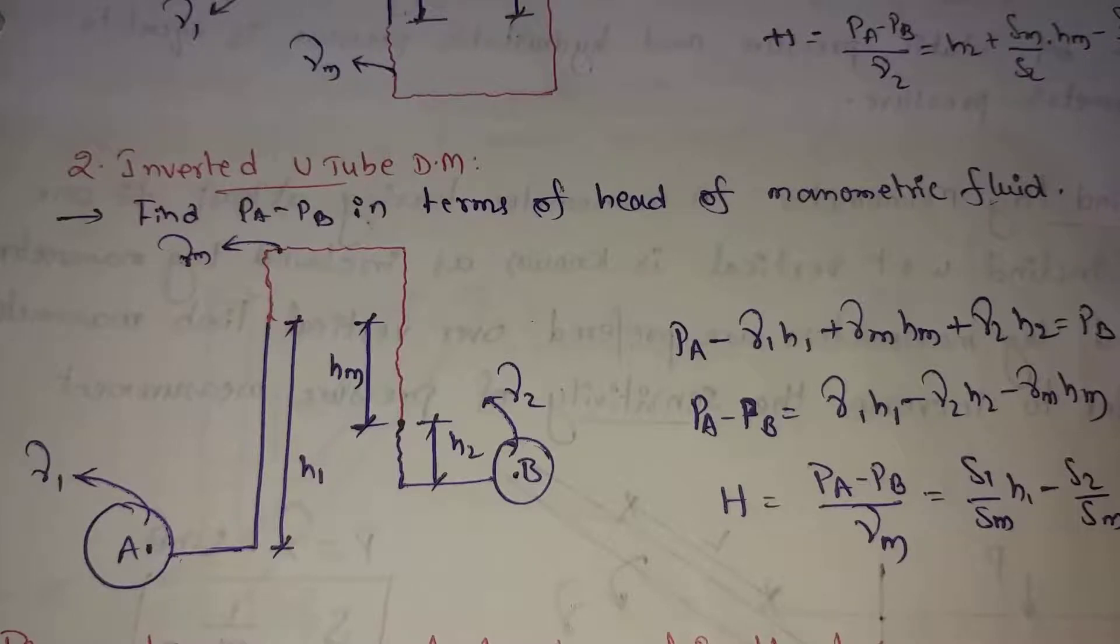But U-tube differential manometers will measure high pressures. But inverted U-tube differential manometers will use low pressures. So this inverted U-tube differential manometers will give better accuracy.